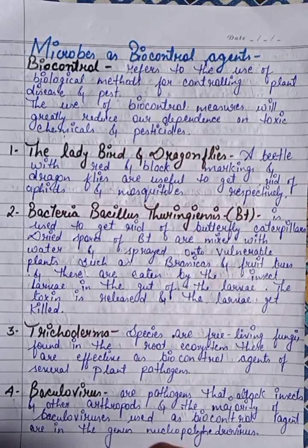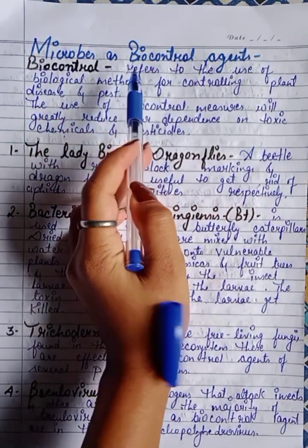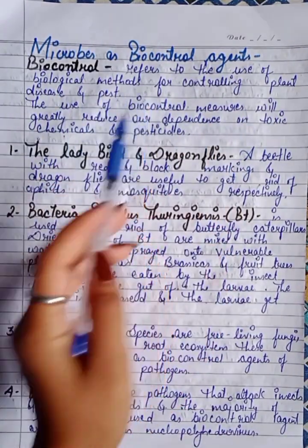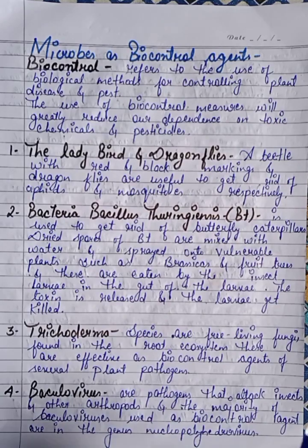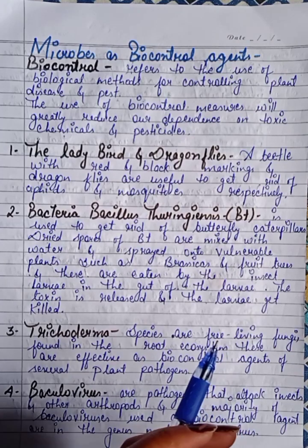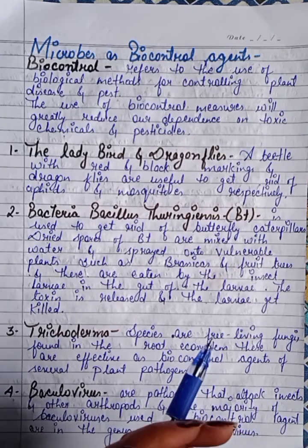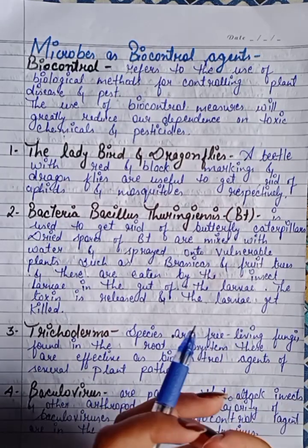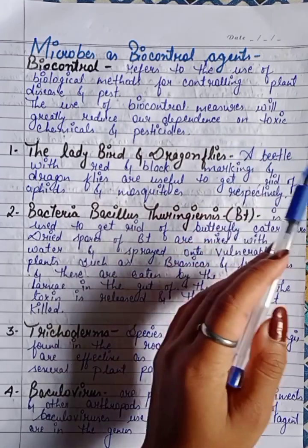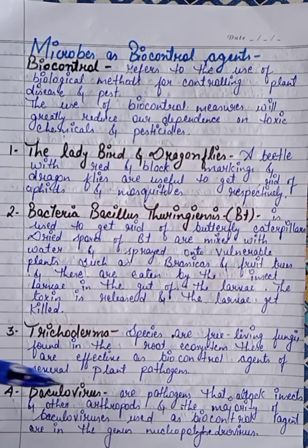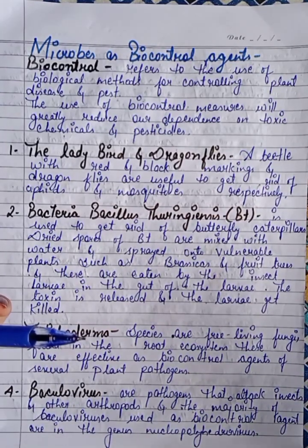Today we will do microbes as biocontrol agents. So first, the question is: what is biocontrol? Biocontrol refers to the use of biological methods for controlling plant disease and pests. The use of biocontrol measures will greatly reduce our dependence on toxic chemicals and pesticides.